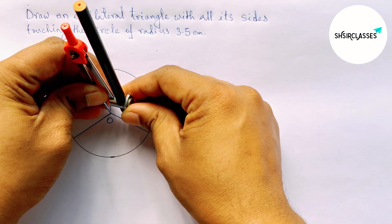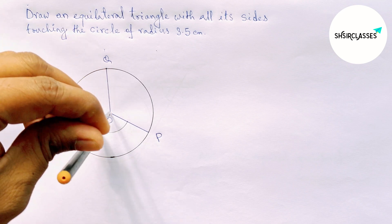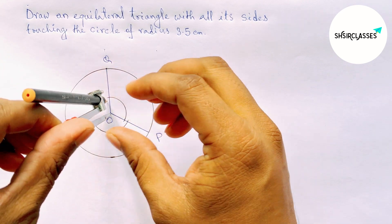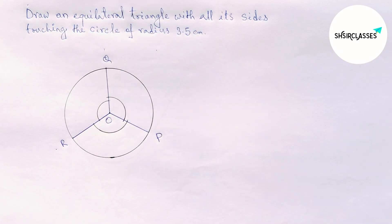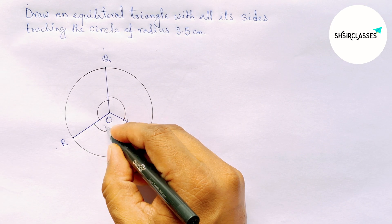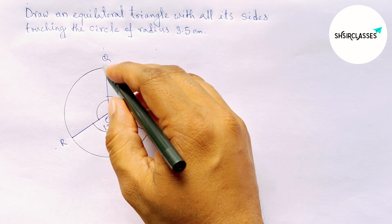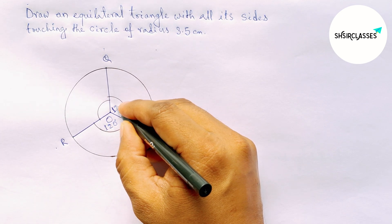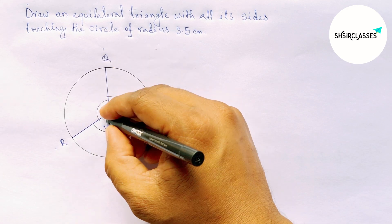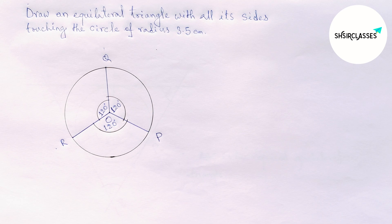Now with the help of a compass, mark all the angles. Angle POR equals 120 degrees, angle POQ equals 120 degrees, and angle QOR equals 120 degrees — so the total is 360 degrees.